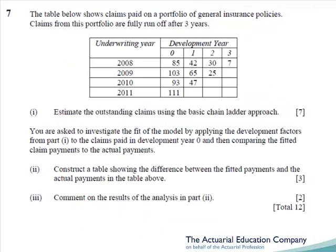Part 7 was testing the basic chain ladder, and the first 7 marks would have been a gift to any student. However, in part 2 we were asked to work with fitted payments. The last time these were asked was in September 2002 question 7, included in our Q&A bank 3. Essentially you use your cumulative development factors on your initial claims to see what would have been expected in those years and then compare them to the actual. The steps are fairly simple — the problem would have been whether students remembered this.